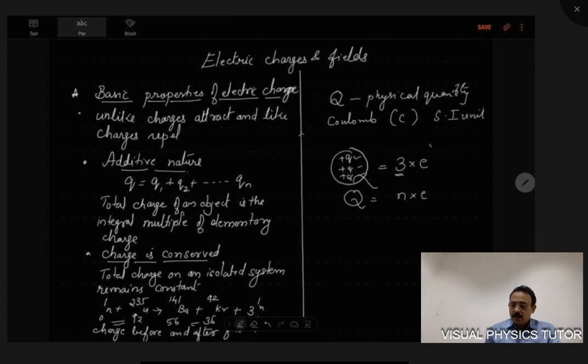The additive nature states that if Q equals Q1 plus Q2 plus till N number of charges, then the total charge of an object is the integral multiple of elementary charge. The charges are conserved.